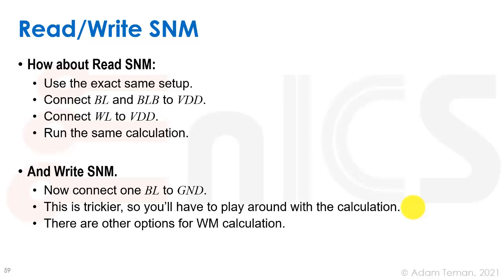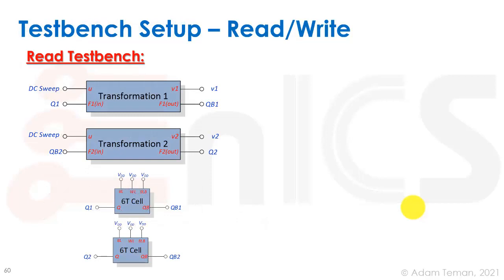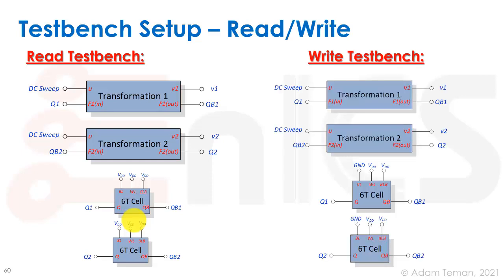For write SNM it's a bit trickier because the only place where we care about bistability is on the side we're not writing to. As mentioned before, there are other options for write margin calculation besides static write SNM. For the read testbench, bit line, bit-line-bar, and word line are all connected to VDD for both feed-forward and feedback cells. For the write testbench, bit line and bit-line-bar are set to ground and VDD respectively.